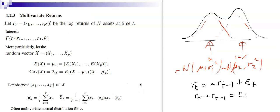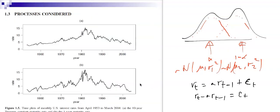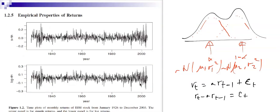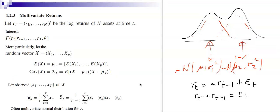Most of the time we don't have only one return. We have R_{i,t} for i = 1 to n assets, giving a vector R_t = (R_{1,t}, ..., R_{n,t}). This vector represents the log returns of a portfolio of n assets at time t. We want to understand the distribution of returns across assets and over time.